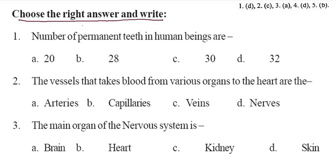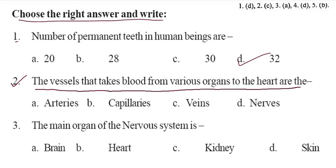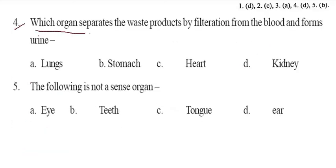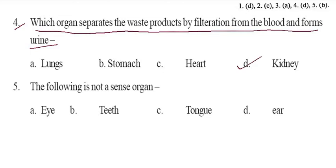Choose the right answer and write. First, the number of permanent teeth in human beings is 32. Second, the vessels that take blood from various organs to the heart are the veins. Third, the main organ of the nervous system is the brain. Fourth, the organ that separates waste products by filtration from the blood is the kidney.